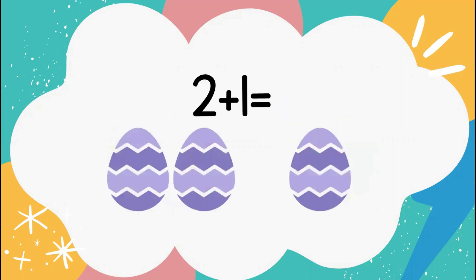Now let's take a look at 2 plus 1 equals and count our eggs to find the total. Remember we're adding — this is addition, so the group is going to be combined to get bigger. Let's count together: 1, 2, 3. Good job — we have 3 eggs. 2 plus 1 equals 3.